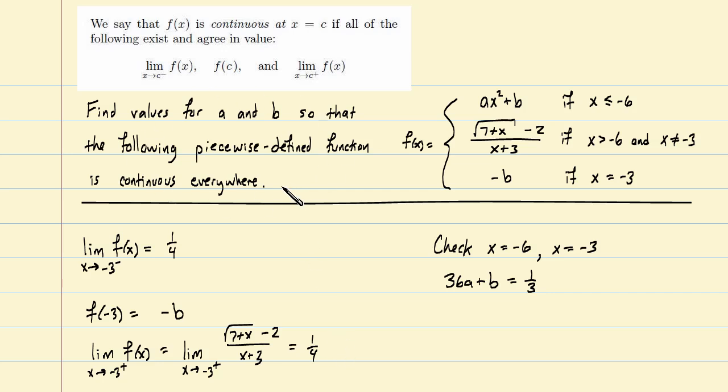Now, if our function is going to be continuous everywhere, it needs to be continuous at negative 3, and that means those three values have to exist and agree. They certainly exist. In order for them to agree, what must b be? It makes sense that if those two things must be equal, then b must be negative 1 fourth. There's our second equation. So we should be able to combine these two things together now to find both the values of a and b. Of course, b is easy. This is a very simple equation. I can then plug this in right here to find the value of a.